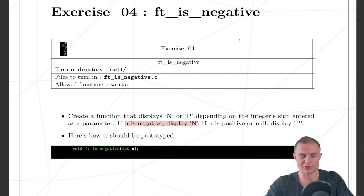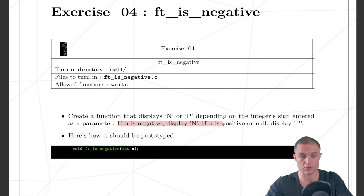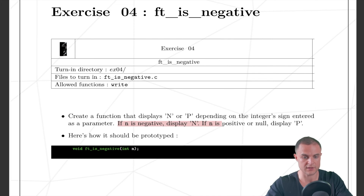It's time for another video, another exercise. This time we change gears and go into logic. We have to make a function that displays n or p depending on the integer's sign entered as a parameter — if negative display n, if positive display p. It's kind of trivial, but you need to know what logic is and how if/else and else-if work.